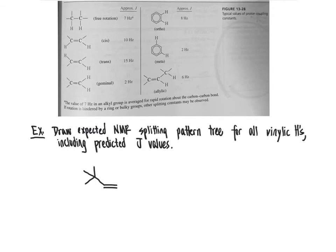Let's take a look at an example problem. To apply this table — which will be available to you on quizzes; you are definitely not expected to memorize it — we're going to draw the expected NMR splitting pattern tree for all of the vinylic hydrogens, including listing the predicted J values. Remember that the vinyl protons are the ones directly bonded to the alkene, and we would expect these three protons — blue, red, and green — to show up as three separate signals in the NMR spectrum.